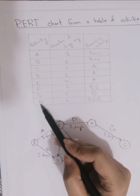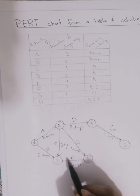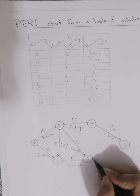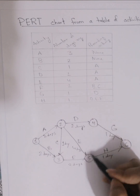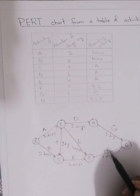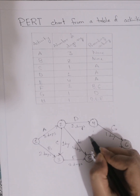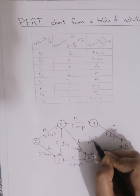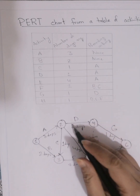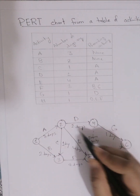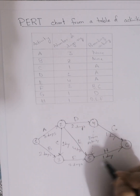Finally, activity H has prerequisites D, E, and F. We can see that D is a prerequisite of H but there is no direct connection, so we give a dummy activity with no duration as a connection arrow. This dummy activity connects from node 4 to node 5, because task D must be completed before task H can start.